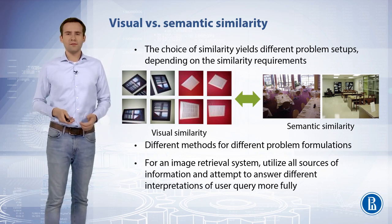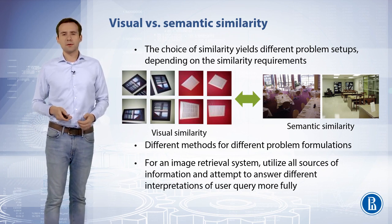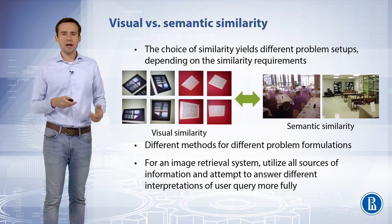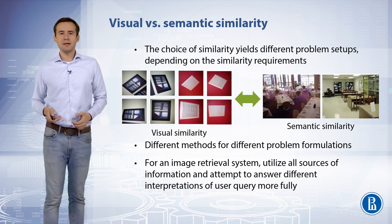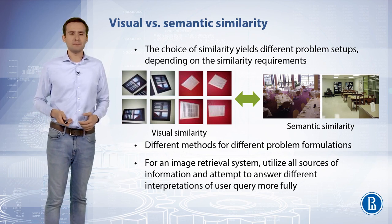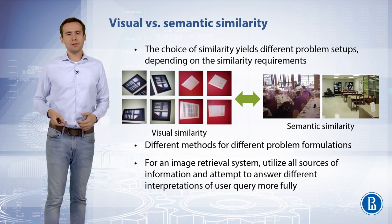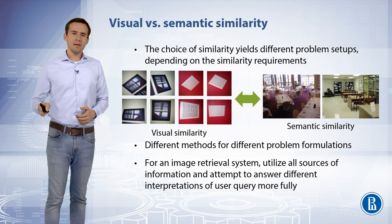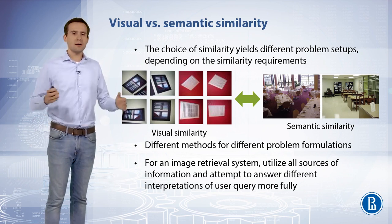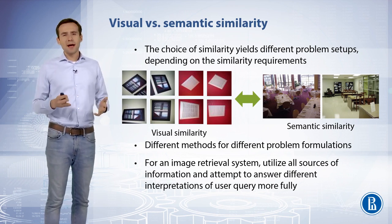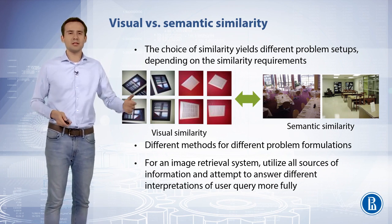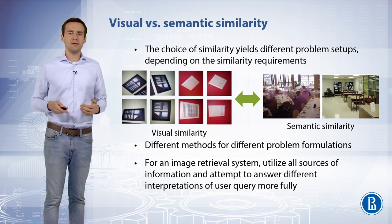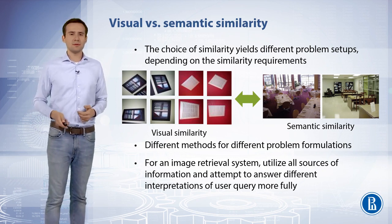We will only consider visual similarity in this course. For each kind of image similarity and for every possible problem type, different solutions were proposed with different descriptions better suited for each respective problem formulation. Depending on the query interpretation, we can find the best results for different formulations to better answer the query. In practice, however, image search systems utilize various interpretations simultaneously and then aggregate the possible results.